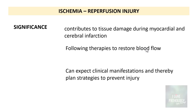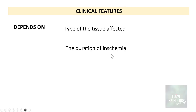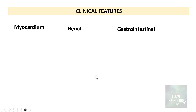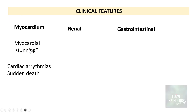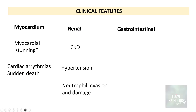Now that we understand the significance of ischemia reperfusion injury, we can expect the potential clinical manifestations and plan strategies to prevent injury. Clinically, it depends upon the type of tissue affected, the duration of ischemia, and the ability to reperfuse. If the tissue is myocardium, it can go into myocardial stunning, leading to sudden cardiac arrhythmias and sudden death. Renal ischemia reperfusion injury can manifest as chronic kidney disease, hypertension, and neutrophil invasion into renal tissue. Gastrointestinal ischemia reperfusion can result in pain or gastrointestinal bleed. In today's context, the myocardium is most relevant, resulting in cardiac arrhythmias and sudden death.